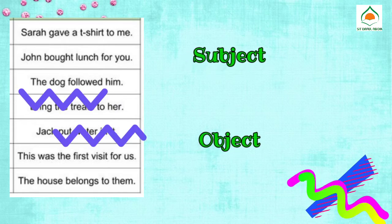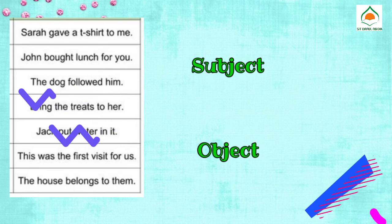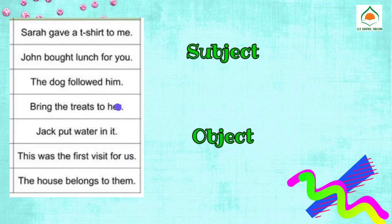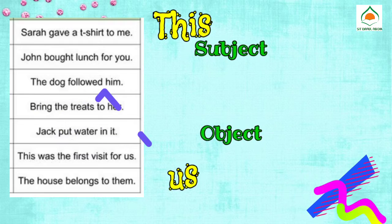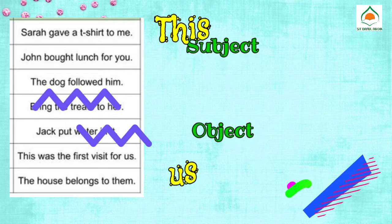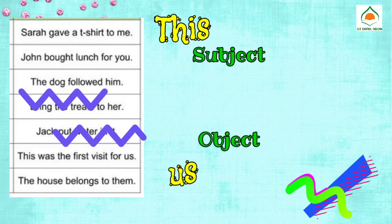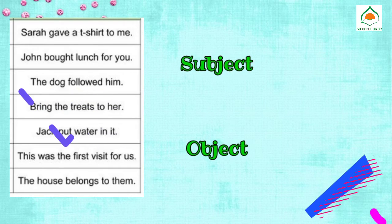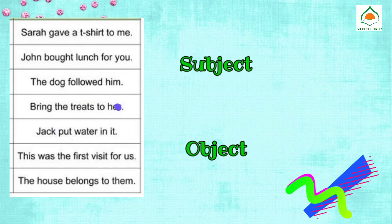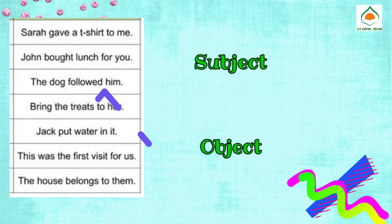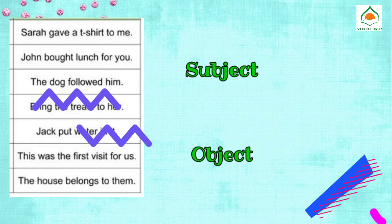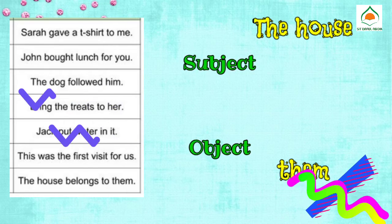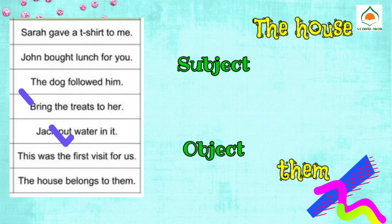Six: This was the first visit for us — the subject is this, the object is us. Seven: The house belongs to them — the subject is the house, the object is them.